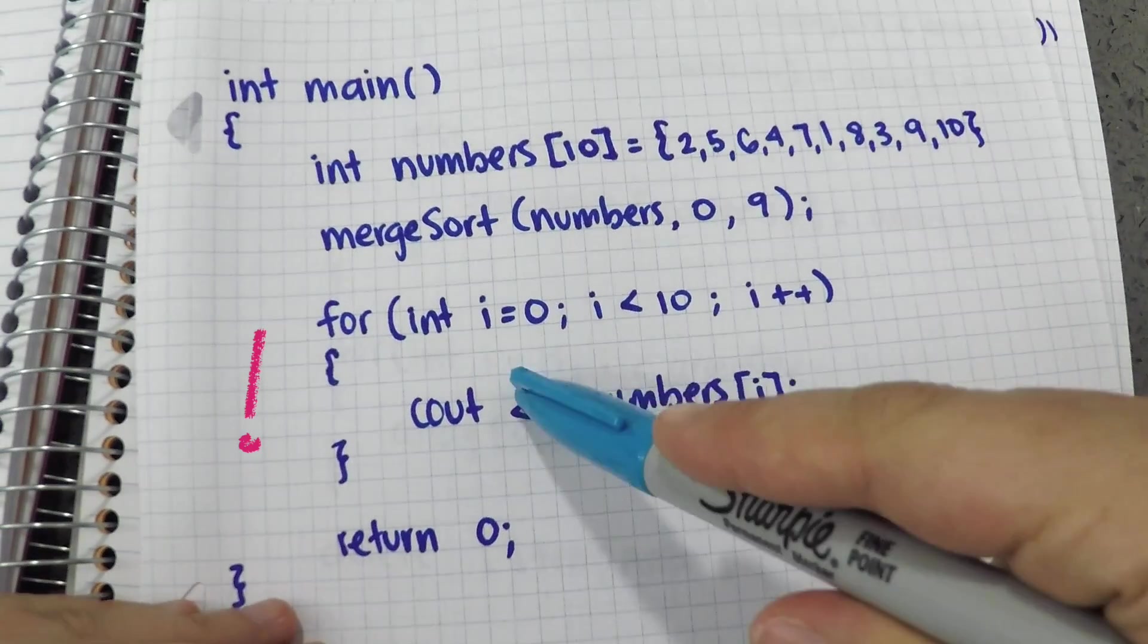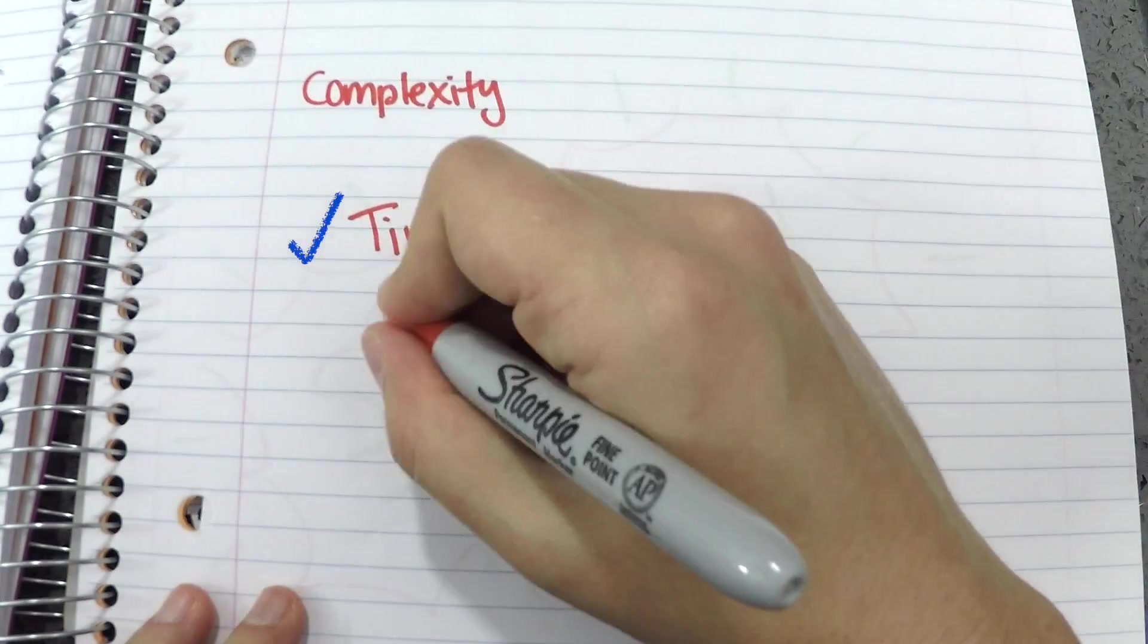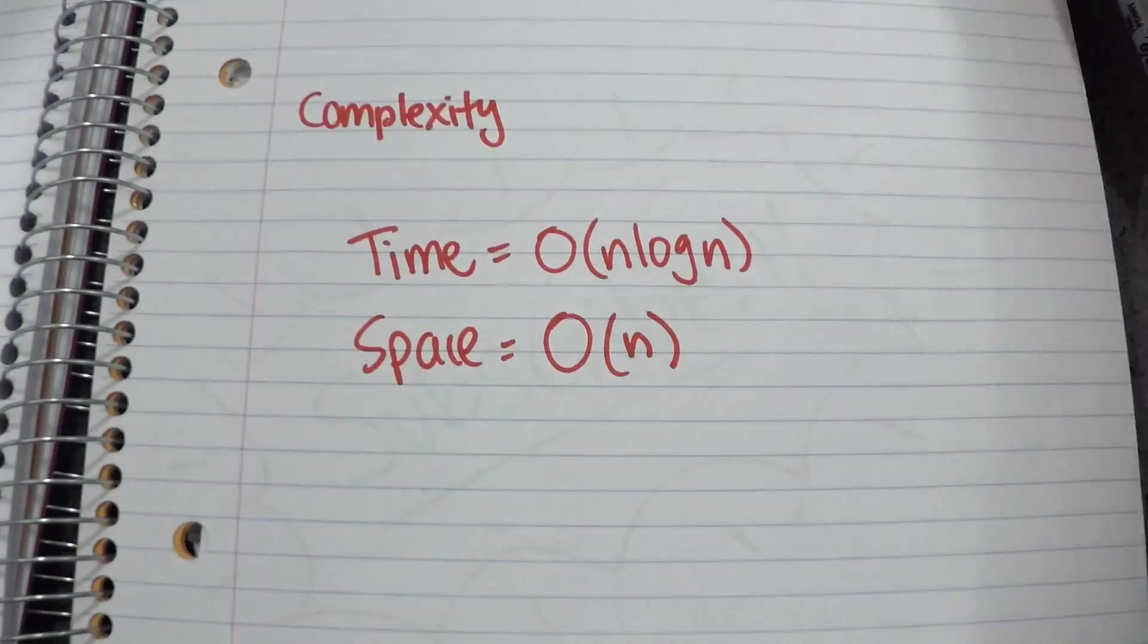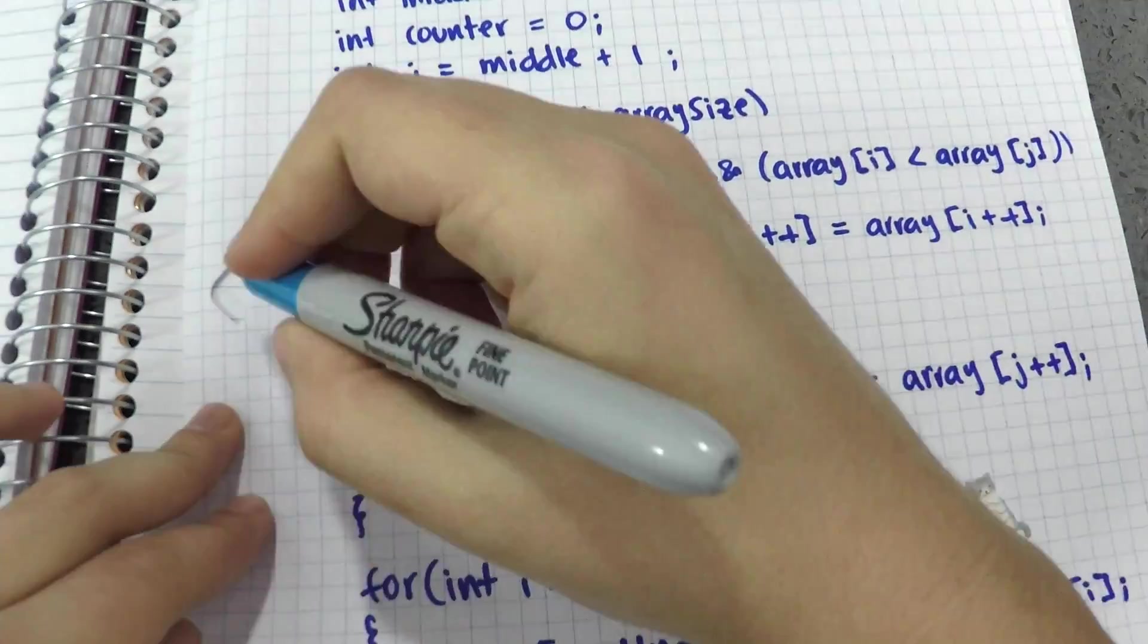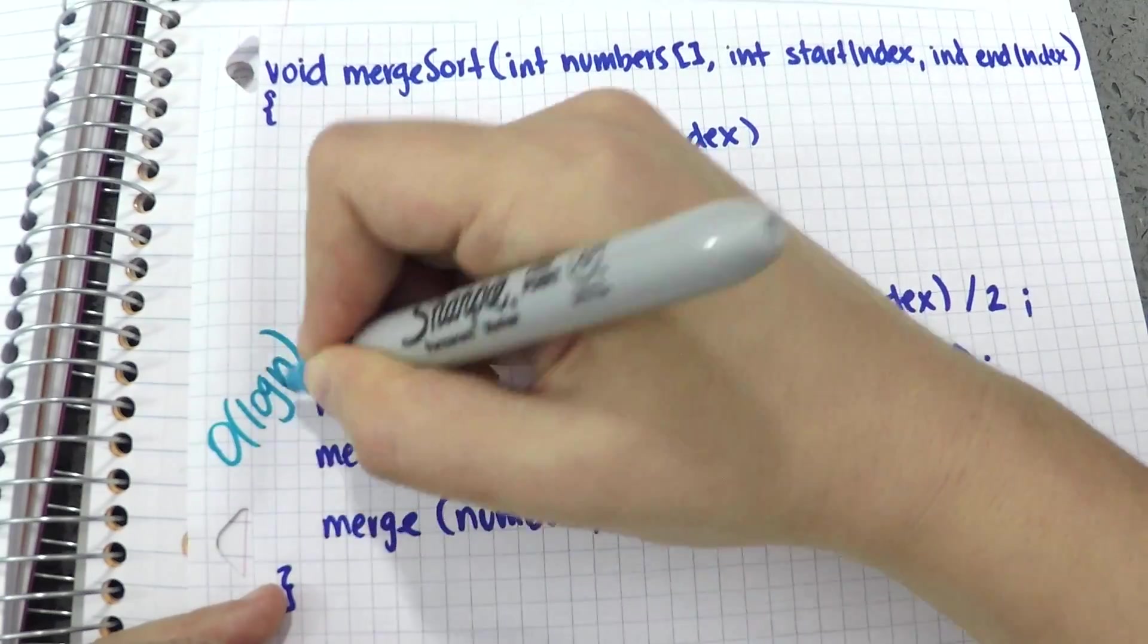After I'm done, I print out the sorted array to check it out. The best, average, and worst cases for time complexity are O n log n. The space complexity is O n. It compares at most in n steps, and every time I cut it in half, I am doing O log n steps. And this is how I get O n log n for time complexity.